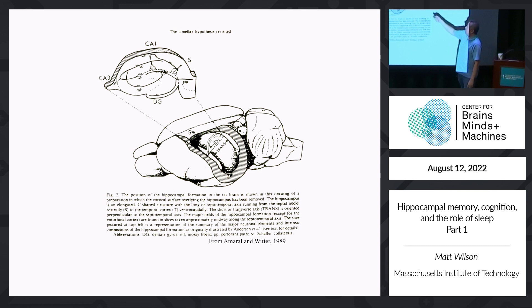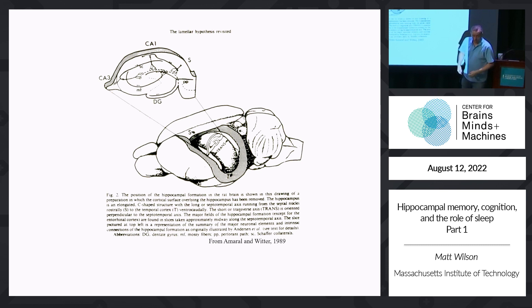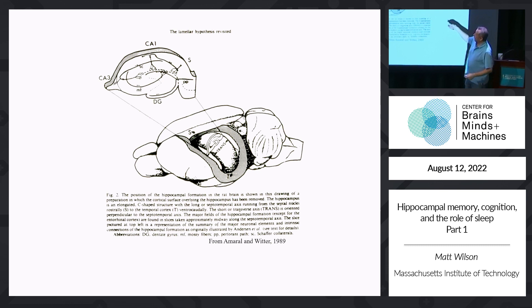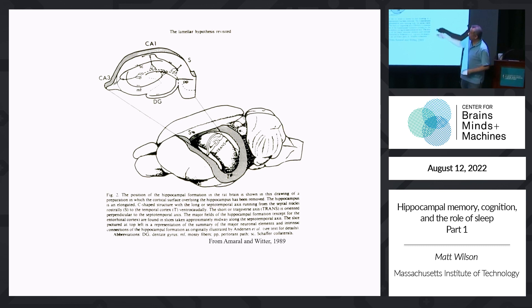Sensory information from the olfactory cortex, auditory, and visual systems also converge, giving you broad integration of world state information in the entorhinal cortex. That input comes in via the perforant path, making synapses first on granule cells in the dentate gyrus, then to CA3—which has strong recurrent connectivity suggesting an auto-associative memory role—then from CA3 to CA1, CA1 to subiculum, and out. CA1 also projects back to the entorhinal cortex, forming a loop.